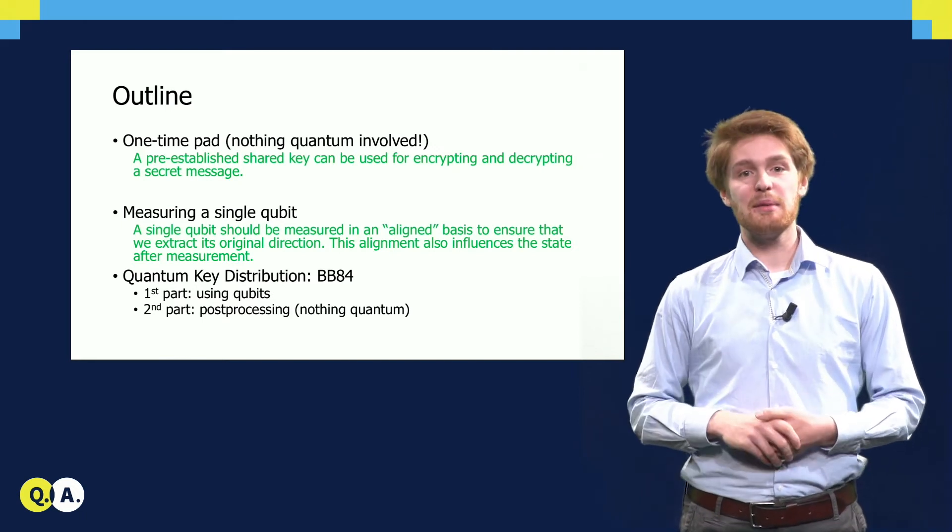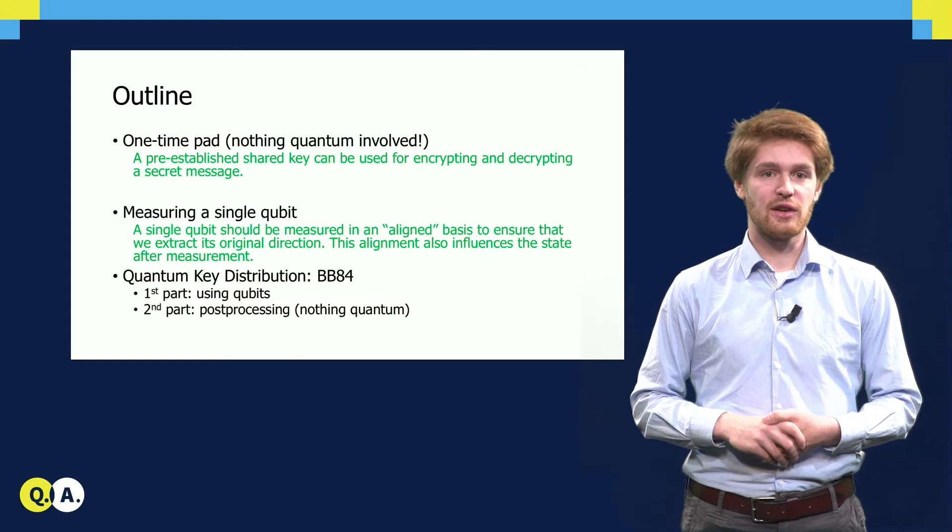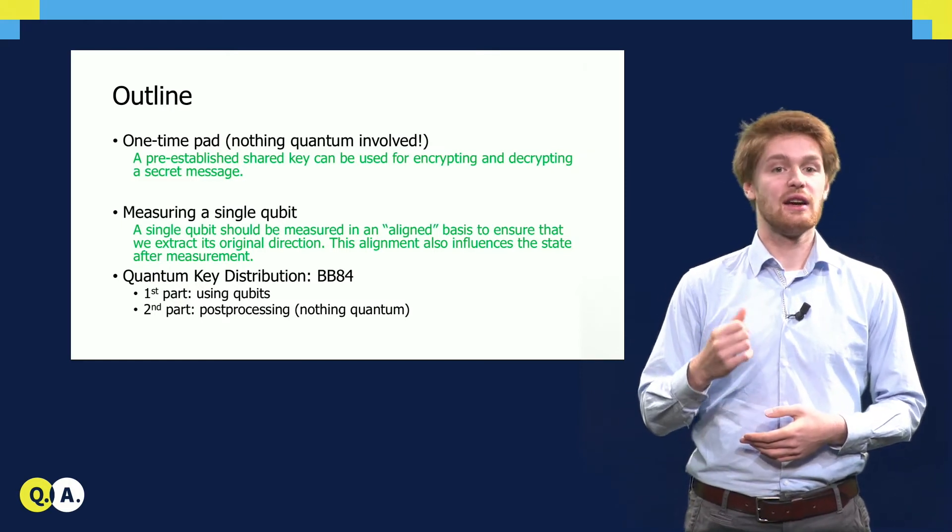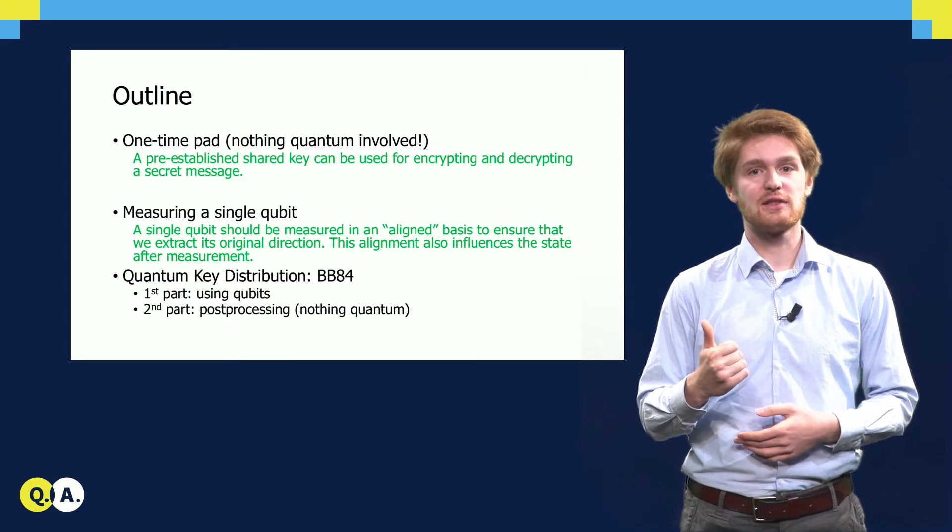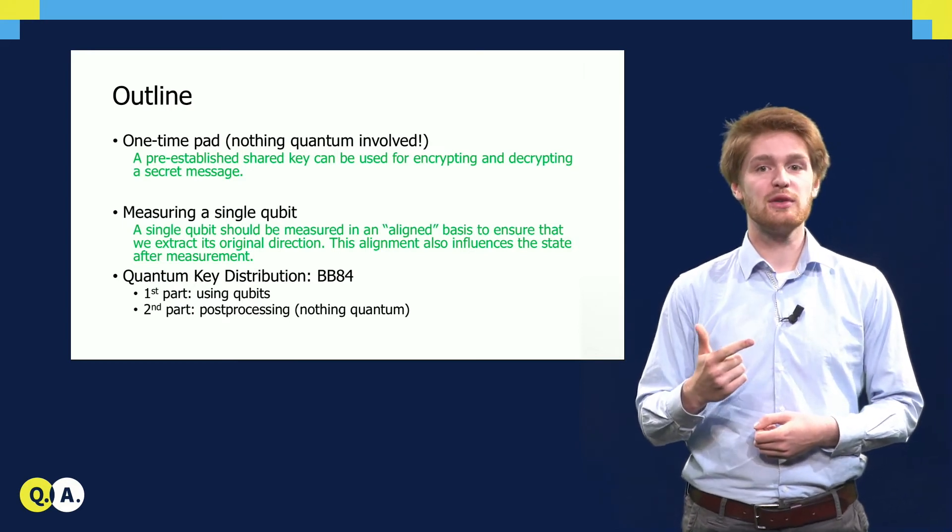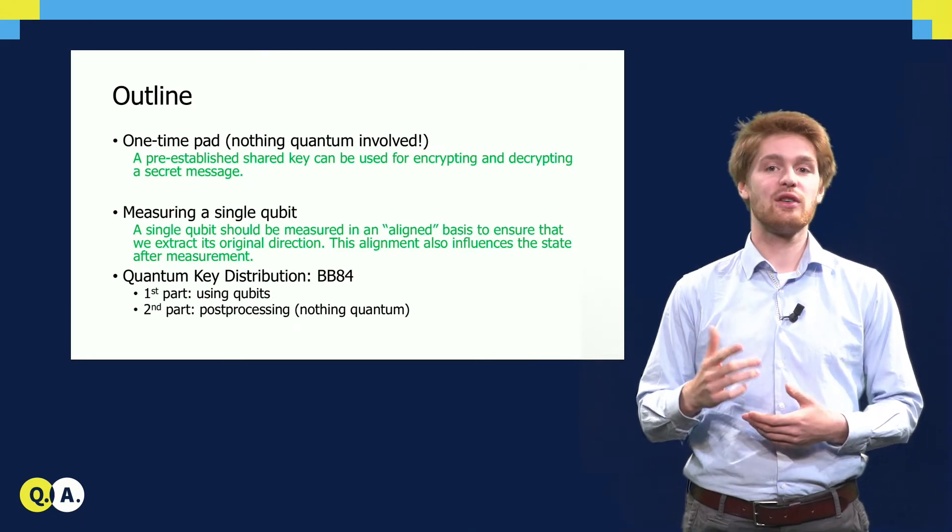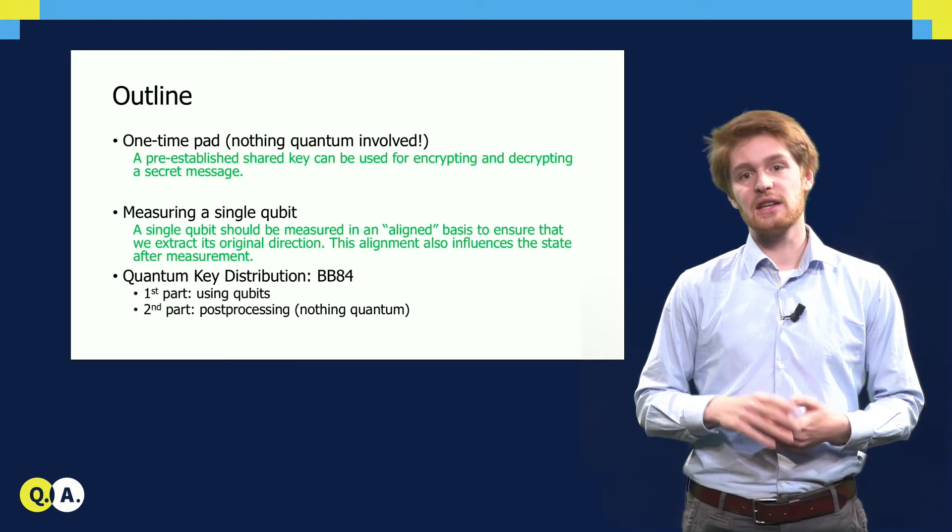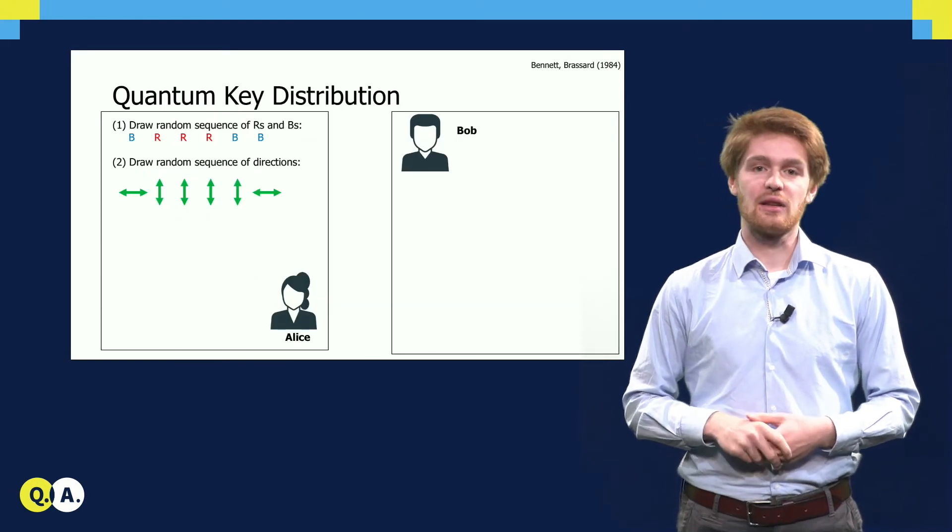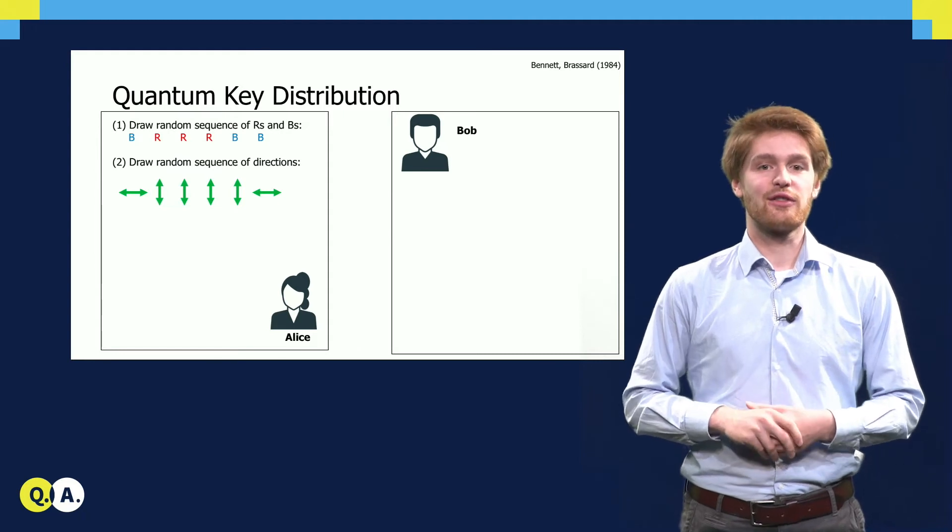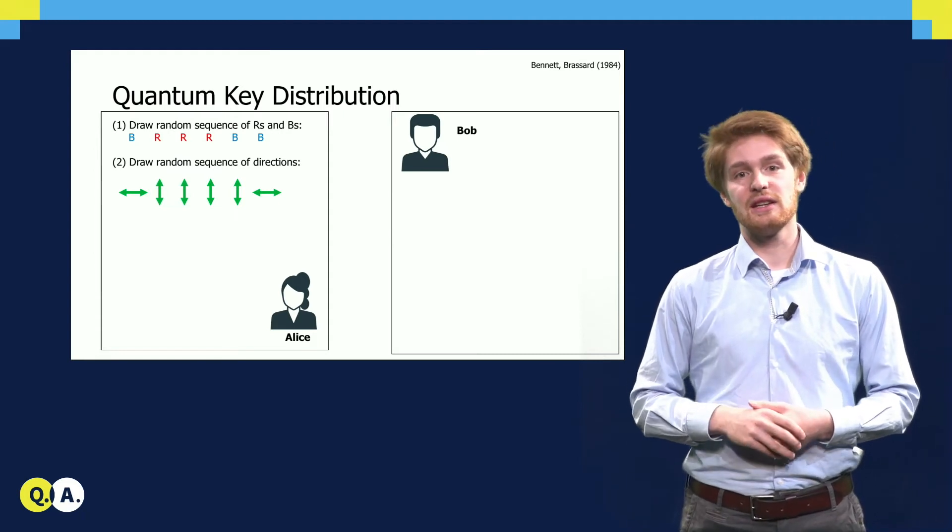Next, we will look at the BB84 protocol for generating a secure shared key. The protocol consists of two parts. In the first part, we use qubits for encoding classical information. And the second part is a post-processing step, which does not involve any quantum operations at all. The setup is as follows. There is Alice on the left and Bob on the right. And in real life, they are far away from each other, so they cannot see each other's actions.